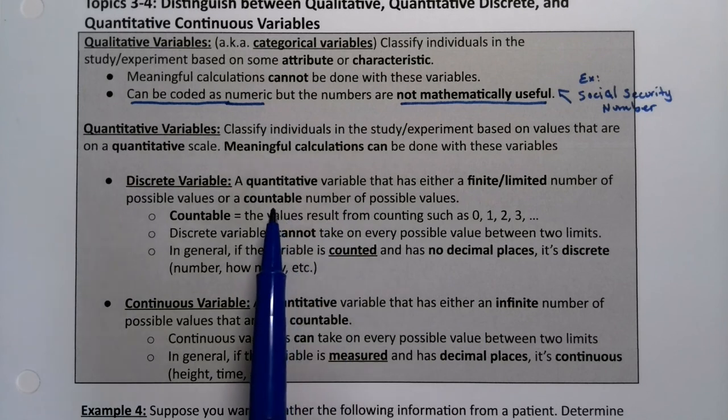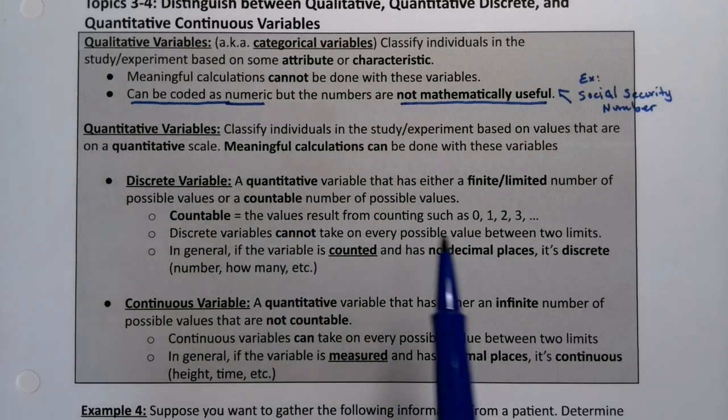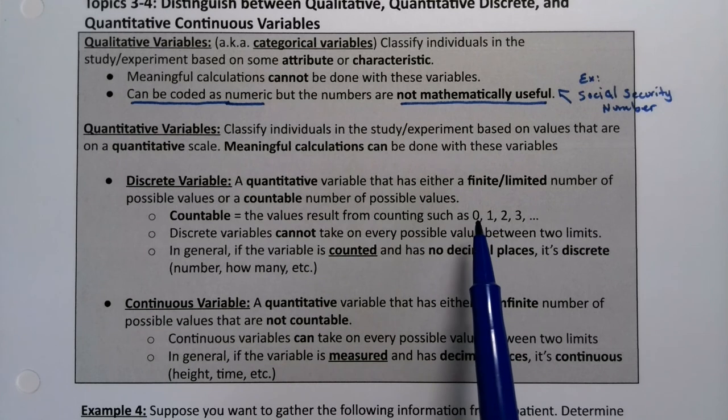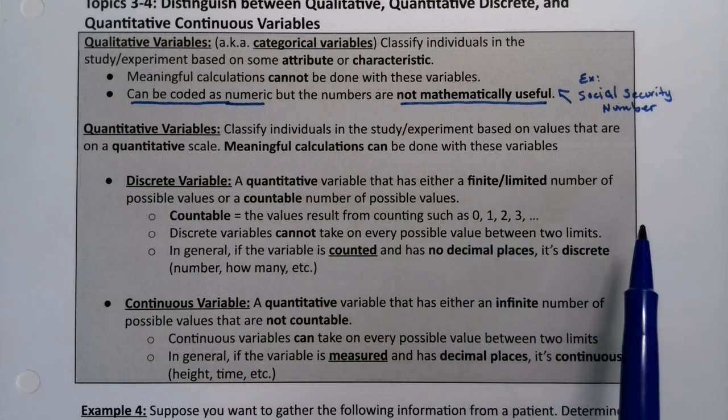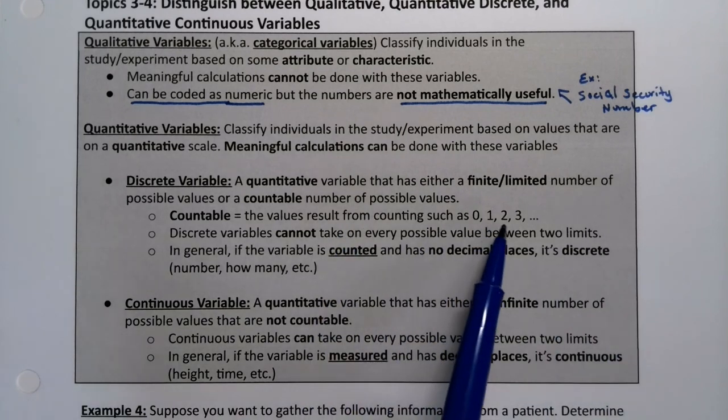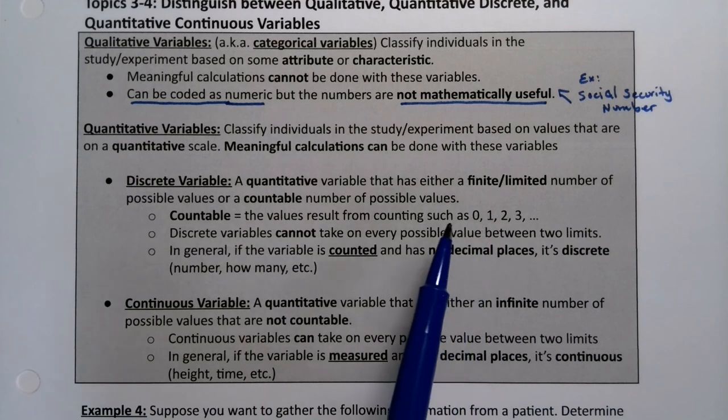So countable can be infinite. So, for example, the integers or the whole numbers from 0, 1, 2, 3, 4, 5, 6, 7, 8, 9, 10, going on forever. It's infinite, but it's counted. You're literally counting them. So that's a discrete number.